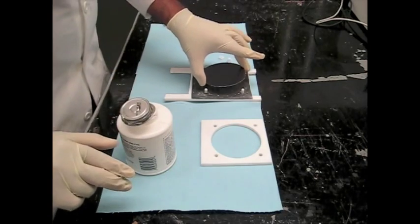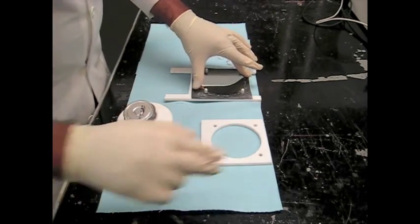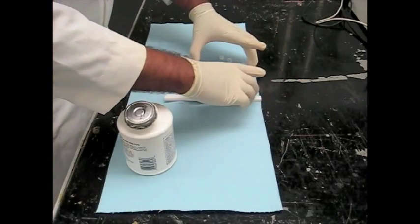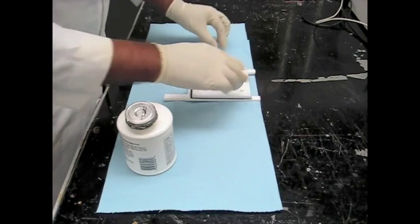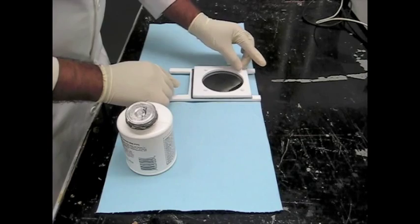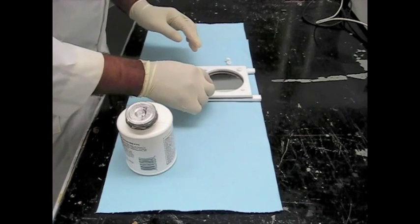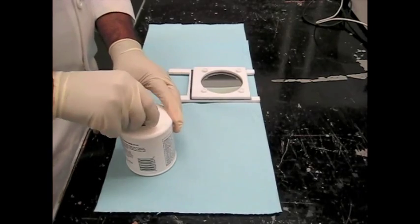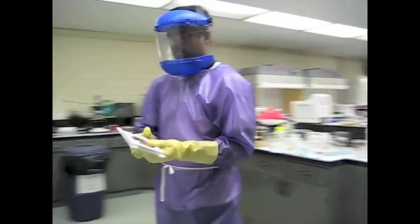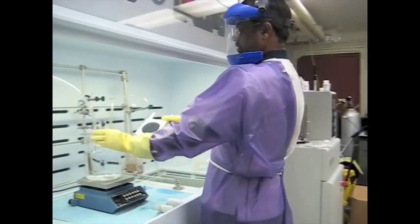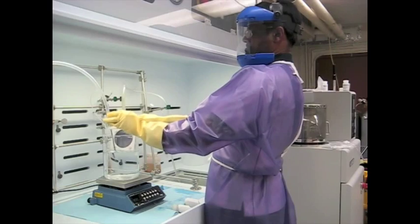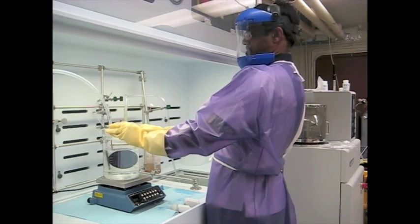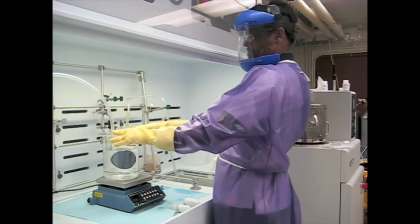Next, the wafer is mounted on a Teflon frame that holds it at an angle during the etching process. This frame also ensures safe handling of the sample wafer in a highly corrosive etchant solution. The frame containing the wafer is finally placed in the etchant. This etches the silicon wafer, leading to the formation of microchannels with a trapezoidal cross-section.